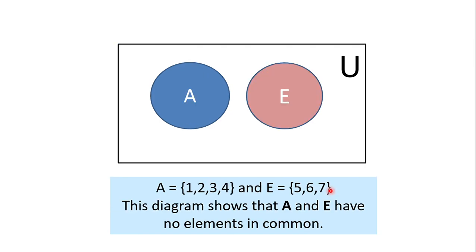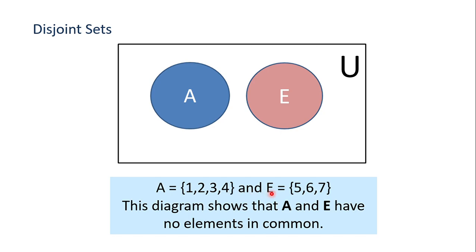Lastly, we have what we call disjoint sets. By the meaning itself — disjoint — they are not joined. So if we have set A and set E, and they are disjoint, they have no elements in common. For example, the elements of A are {1, 2, 3, 4} and the elements of E are {5, 6, 7}. As you can see, they don't have any element in common.